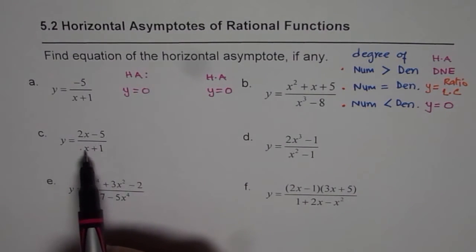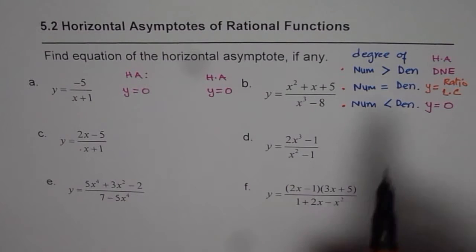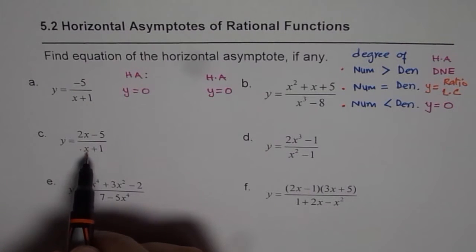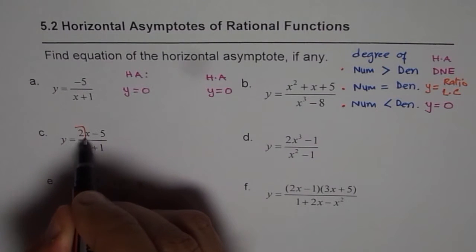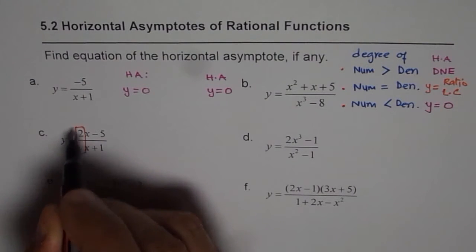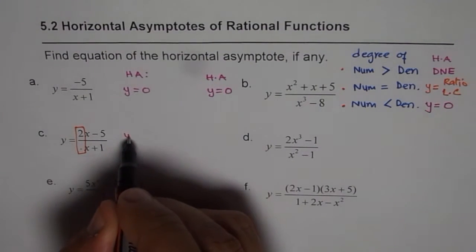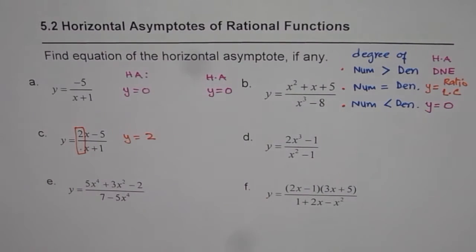In example C, the numerator and denominator have the same degree. When degrees are the same, we use the ratio of leading coefficients, which is 2 over 1. So the horizontal asymptote is y equals 2.